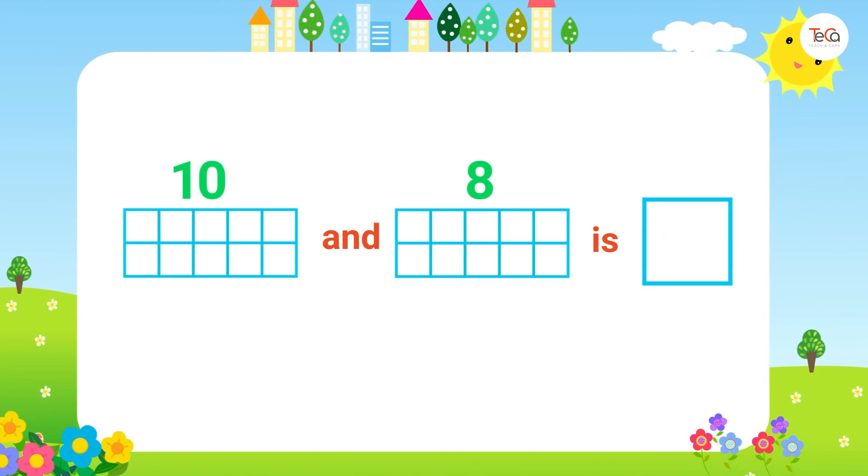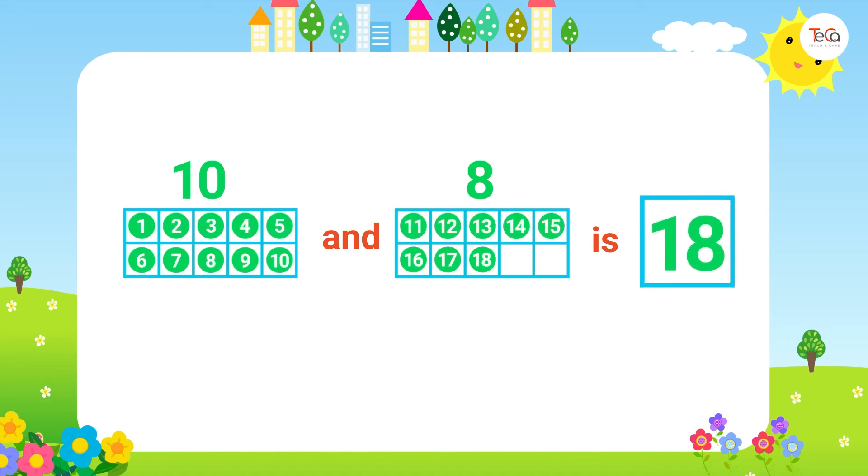And finally, 10 and 8 is 18. We can draw dots like this to have 18 dots. This shows number 18.